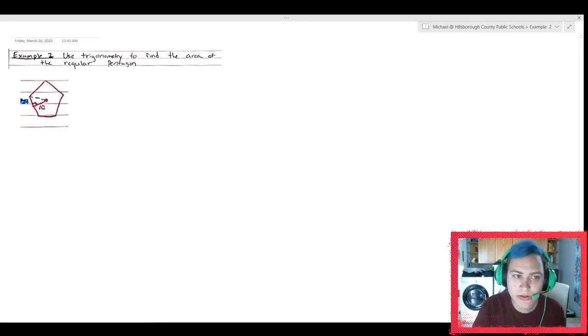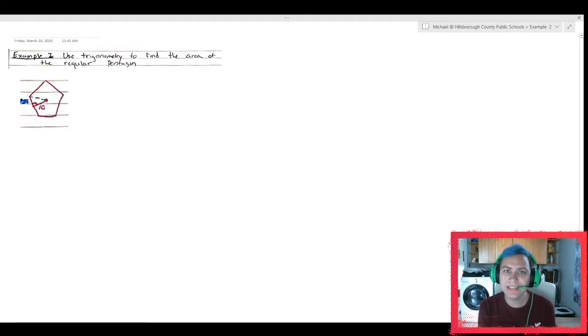Let's look at example two. This one says use trigonometry to find the area of this regular pentagon. I run into a little bit of a problem here because in this regular pentagon, they only gave me an apothem. The last one was really easy because I knew the side length. I took that side length and I could just multiply it by five to get the perimeter. I don't know the perimeter here though, which is throwing me into a little bit of a problem.